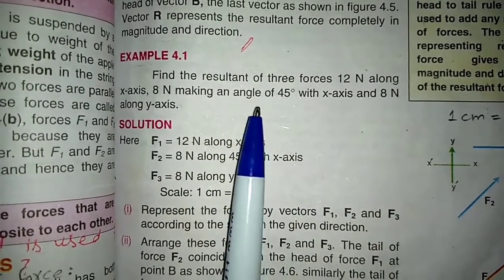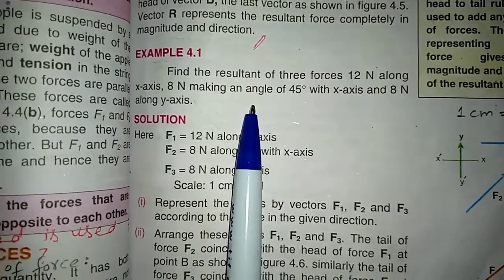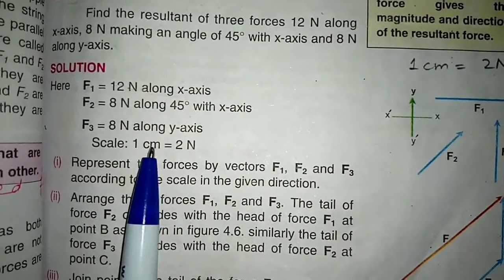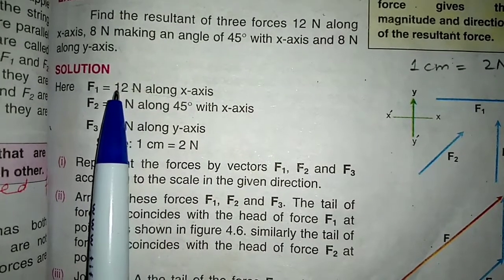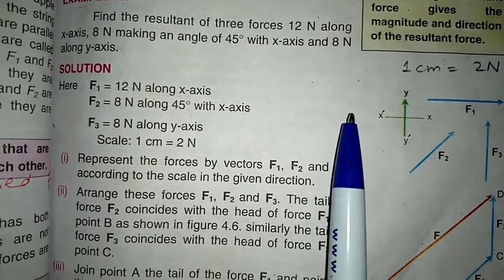First, we take a scale. Then, according to the scale, we will draw the vectors and find the resultant. Students, in this example, we will take 1 cm equals 2 newton. So, if we draw F1 12 newton, the x-axis will be horizontal. F1 will be horizontal along the x-axis.